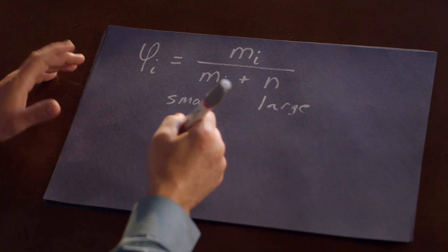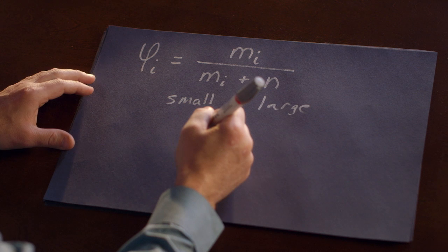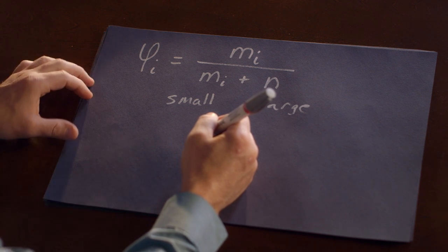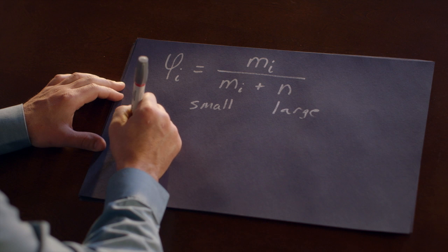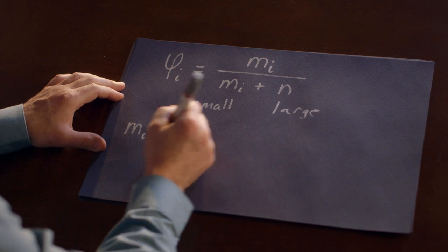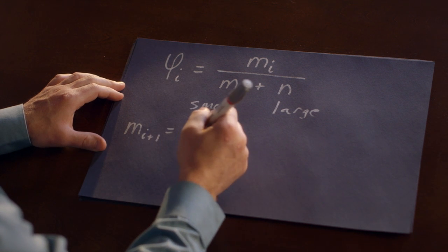Now we can consider the whole process filtering as we go from one particle to the next. So if M sub i denotes the number of small pores that are available at step i plus one, we can capture that by saying, well, there's a chance that the particle fell through a large pore.